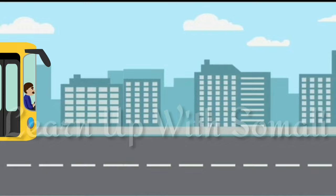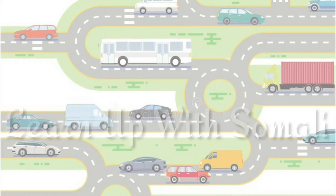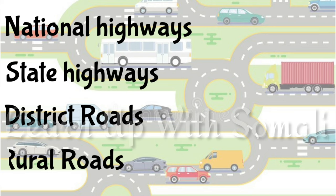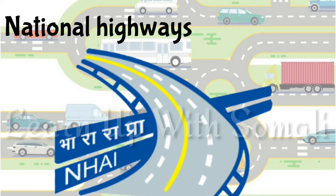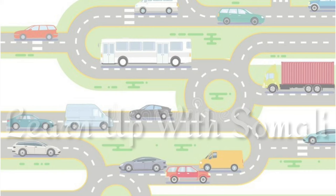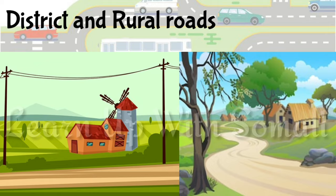The network of Indian roadways consists of national highways, state highways, district roads, and rural roads. National highways connect big cities and states. State highways connect important cities within a state. District and rural roads help us move around the countryside and rural areas within a district.